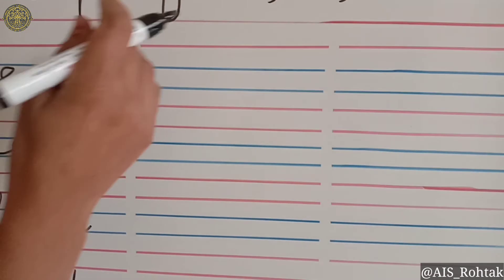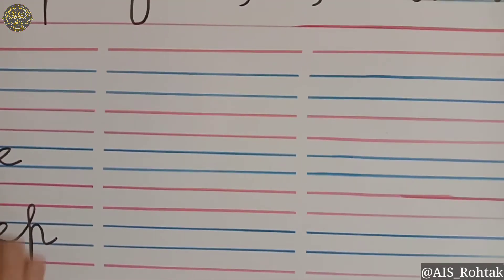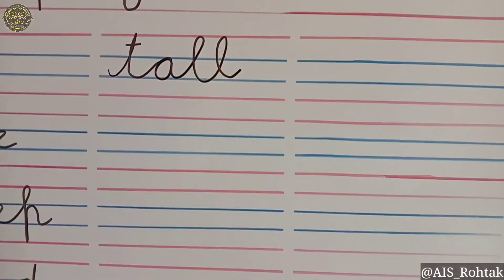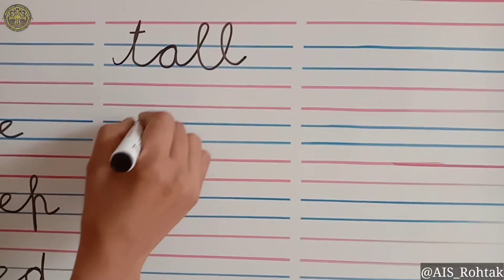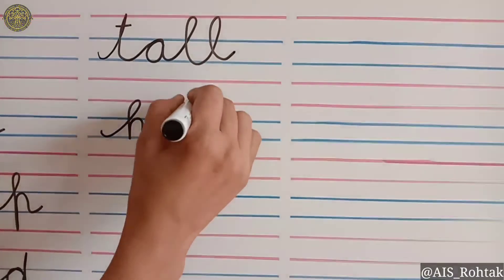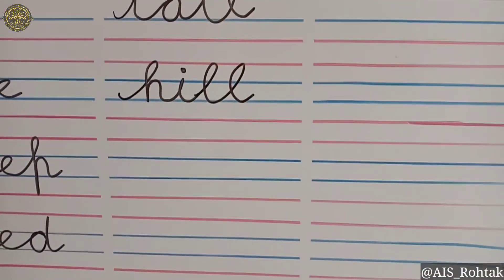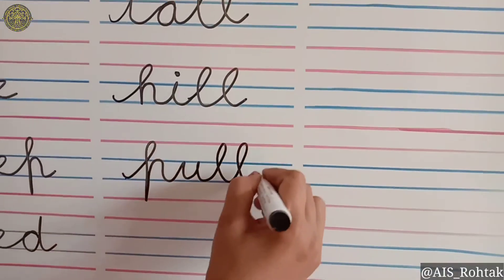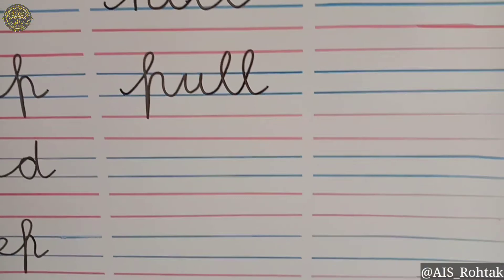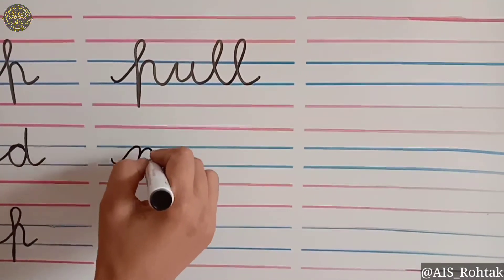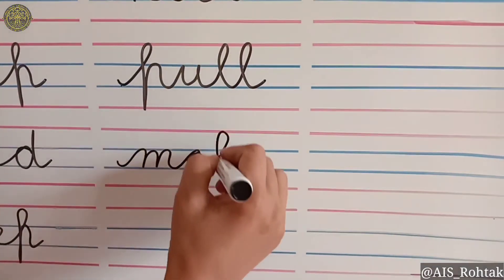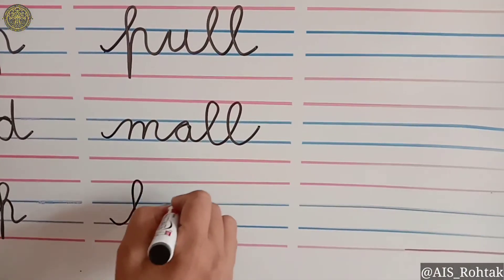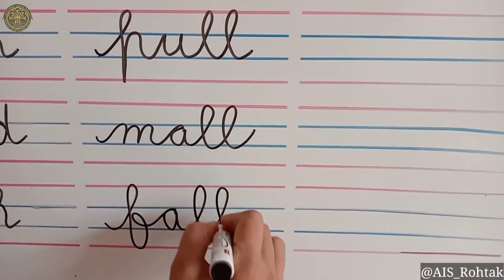Now we will write double L sound words. 'Tall' — T-A-LL. 'Hill' — H-I-LL. 'Pull' — P-U-LL. 'Mall' — M-A-LL. 'Fall' — F-A-LL.